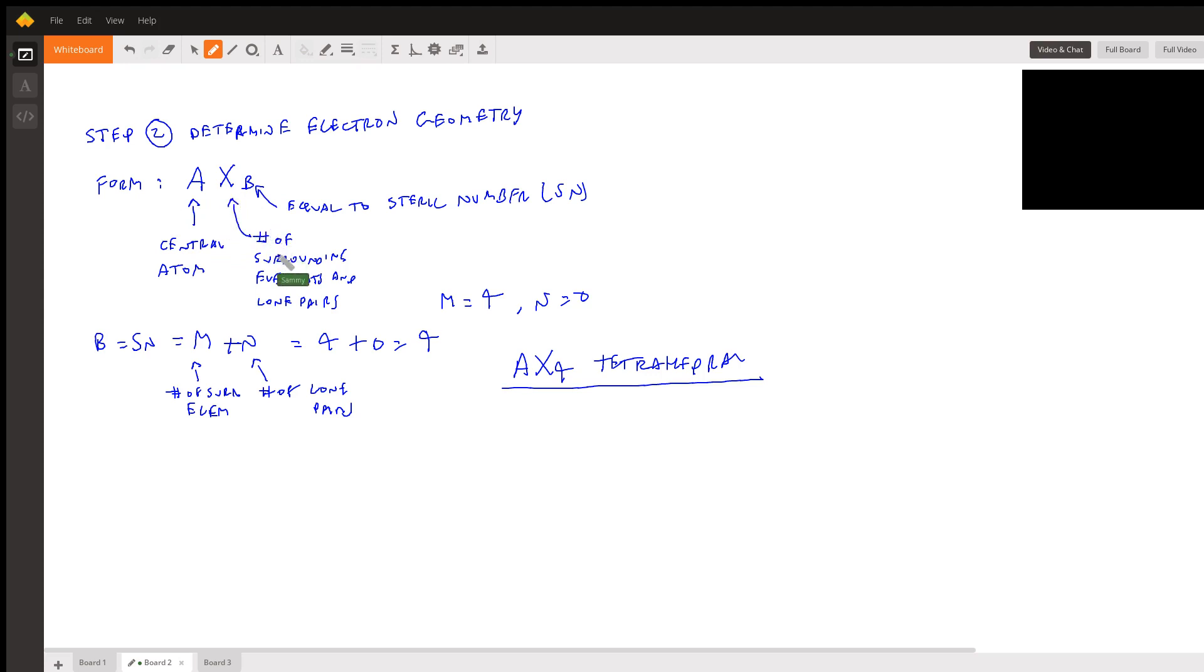A is the central atom. X is the number of surrounding elements and lone pairs, and B is equal to the steric number SN. So B is equal to steric number SN, and that is equal to M plus N. So M is equal to the number of surrounding elements, and N is equal to the number of lone pairs.